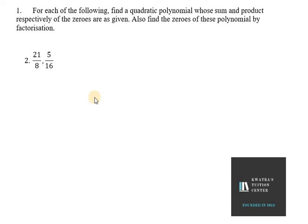Let's move on to the second part of question number one. In this we are given sum as 21 over 8 and product as 5 over 16. So my s is 21 over 8 and my product is 5 over 16. Alpha plus beta equals 21 over 8 and alpha dot beta equals 5 over 16.